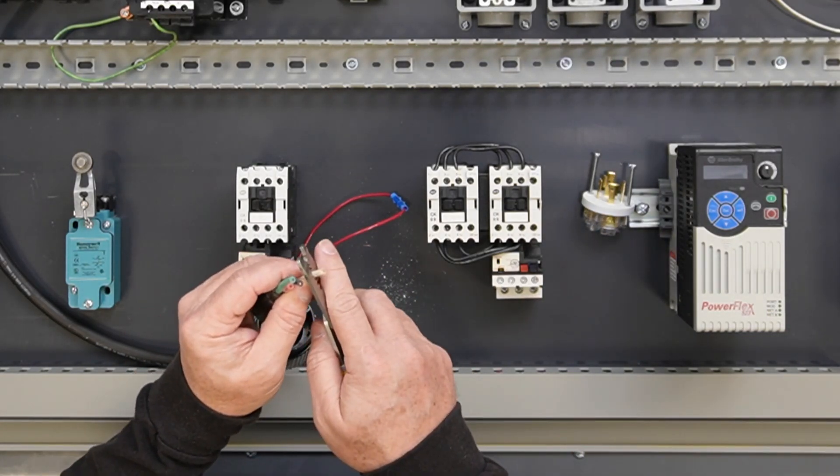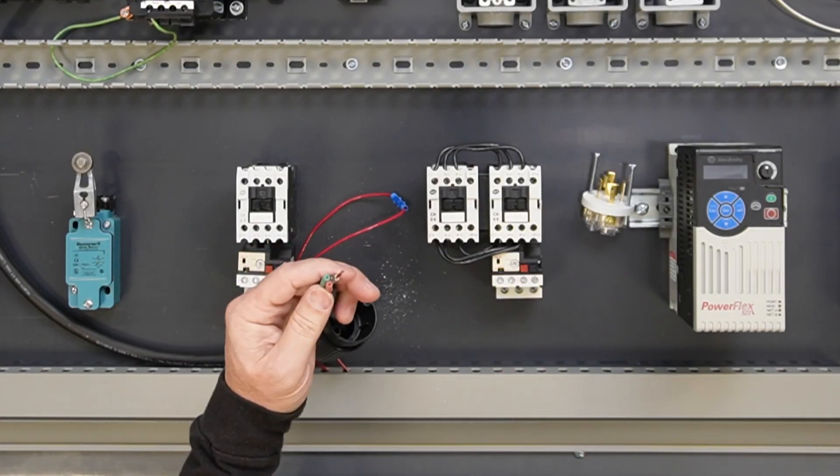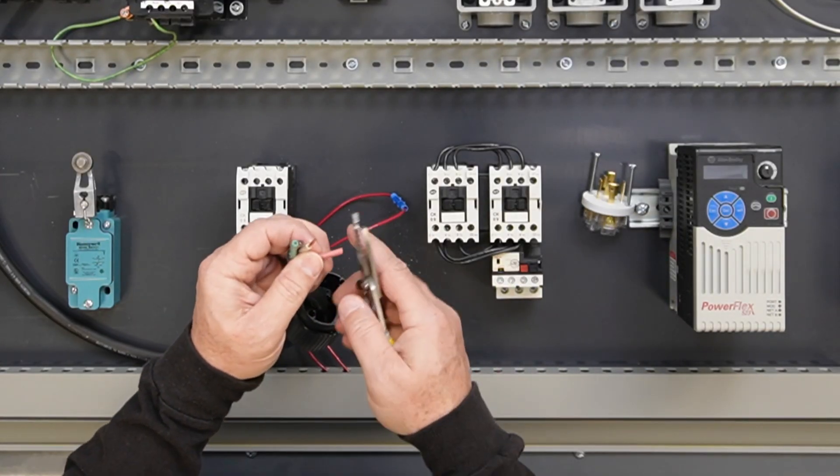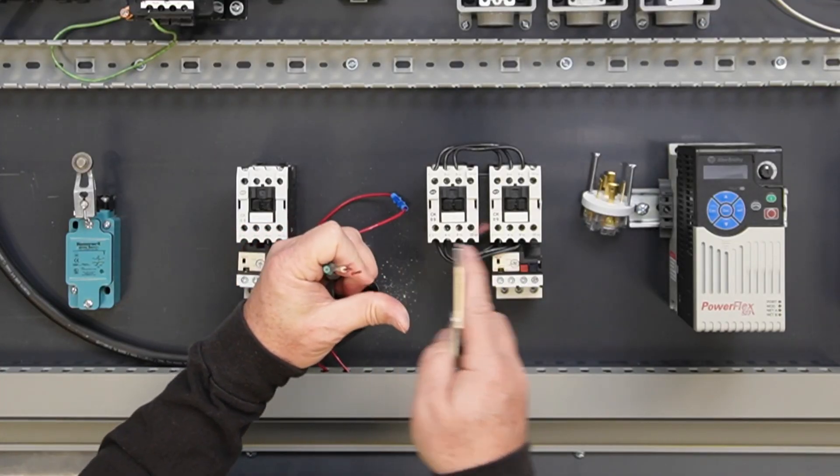Next, strip the end of each individual wire approximately 11/16 of an inch. Use care to not break any individual strands of wire that will derate the ampacity of the wire.